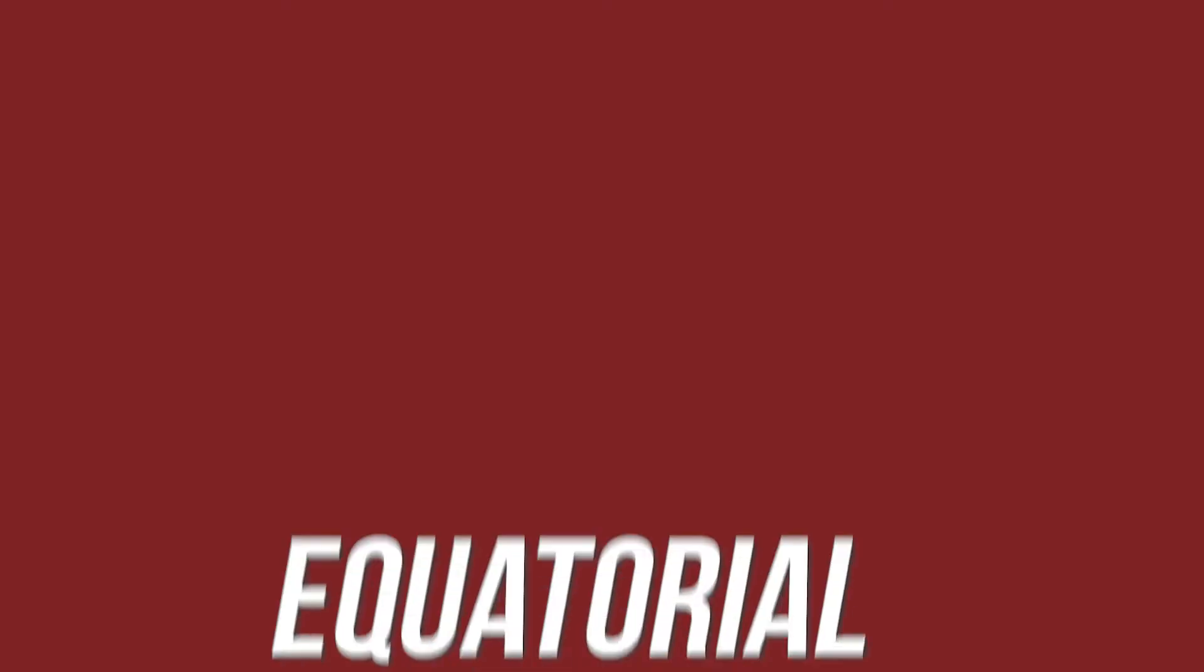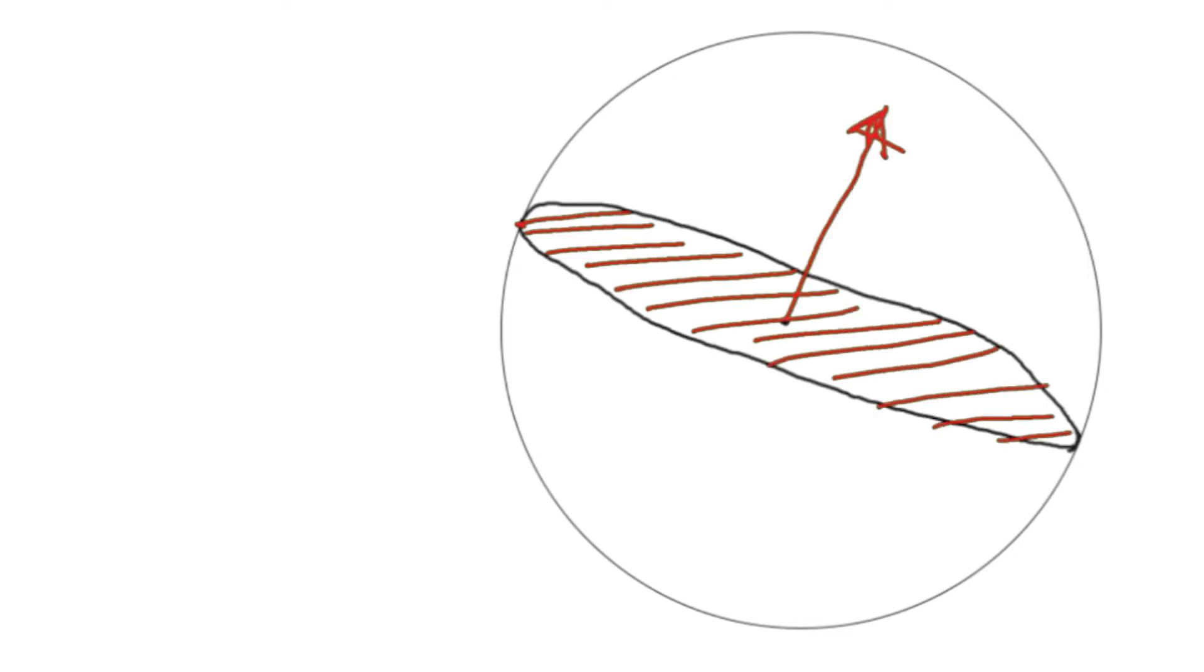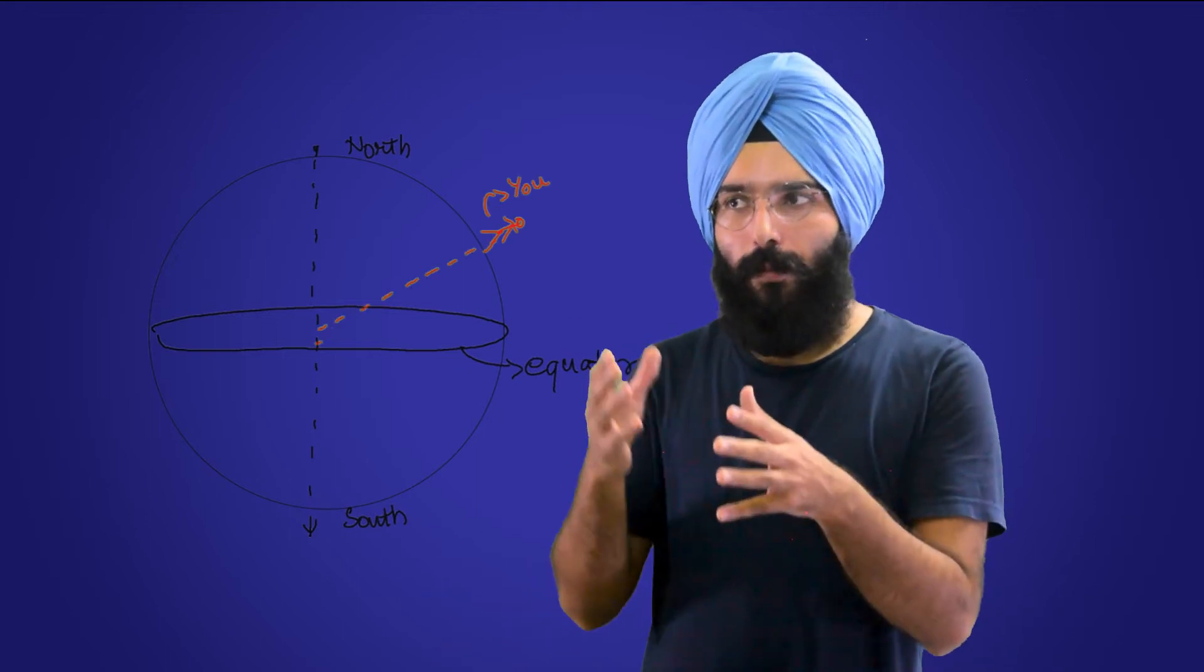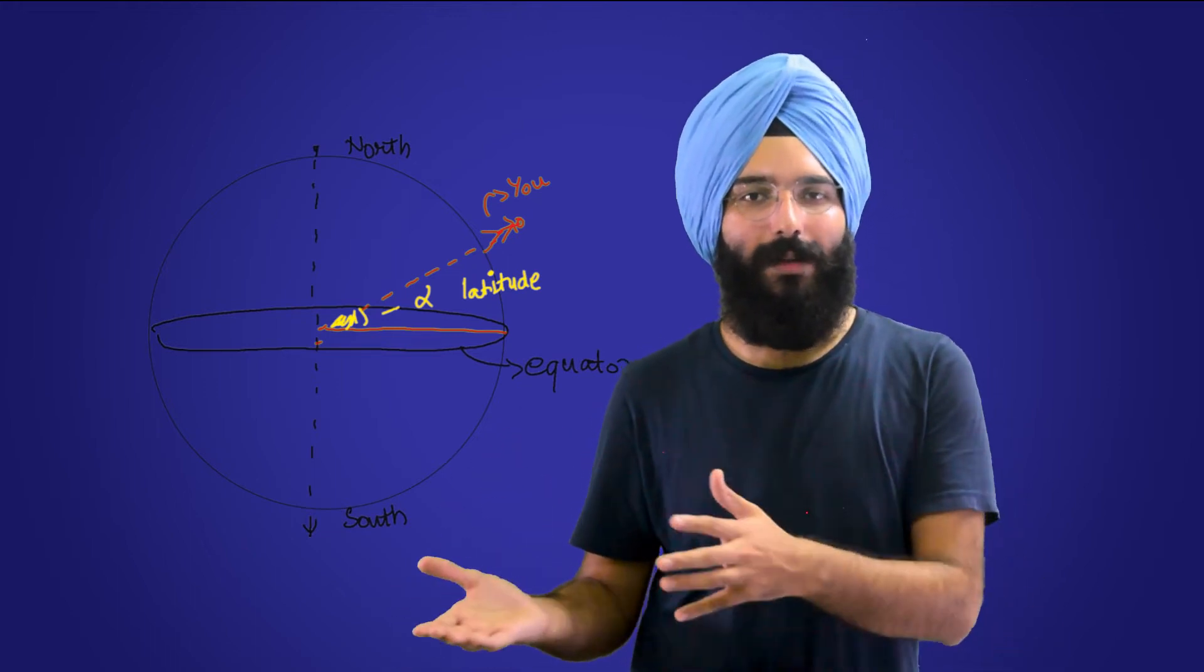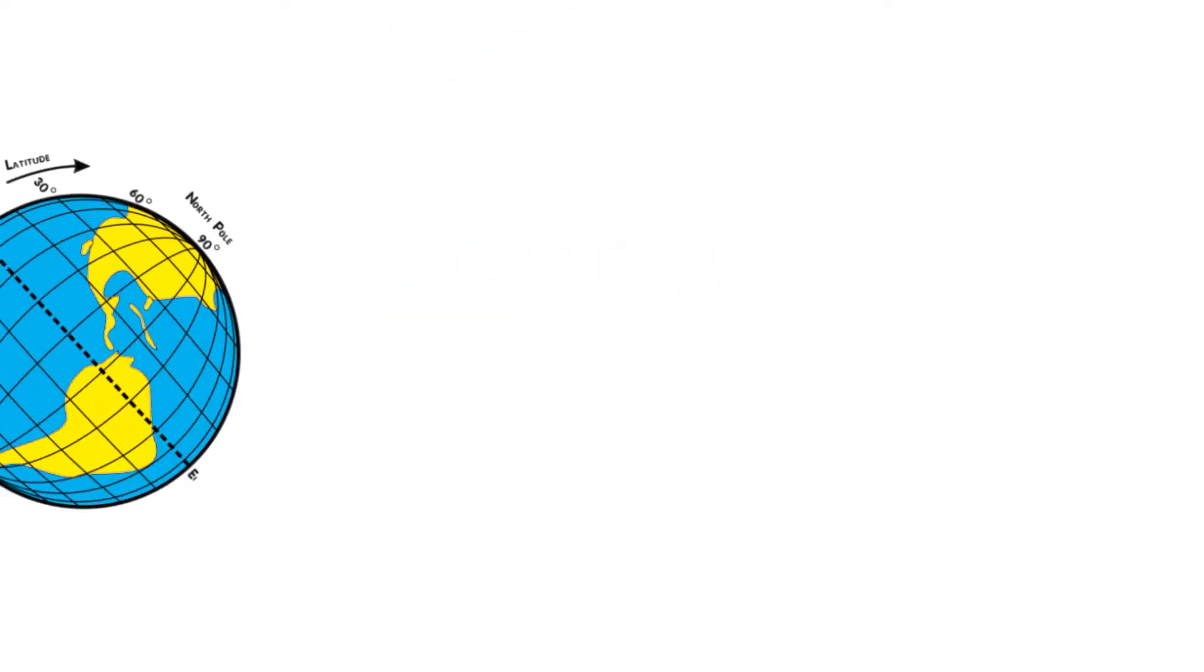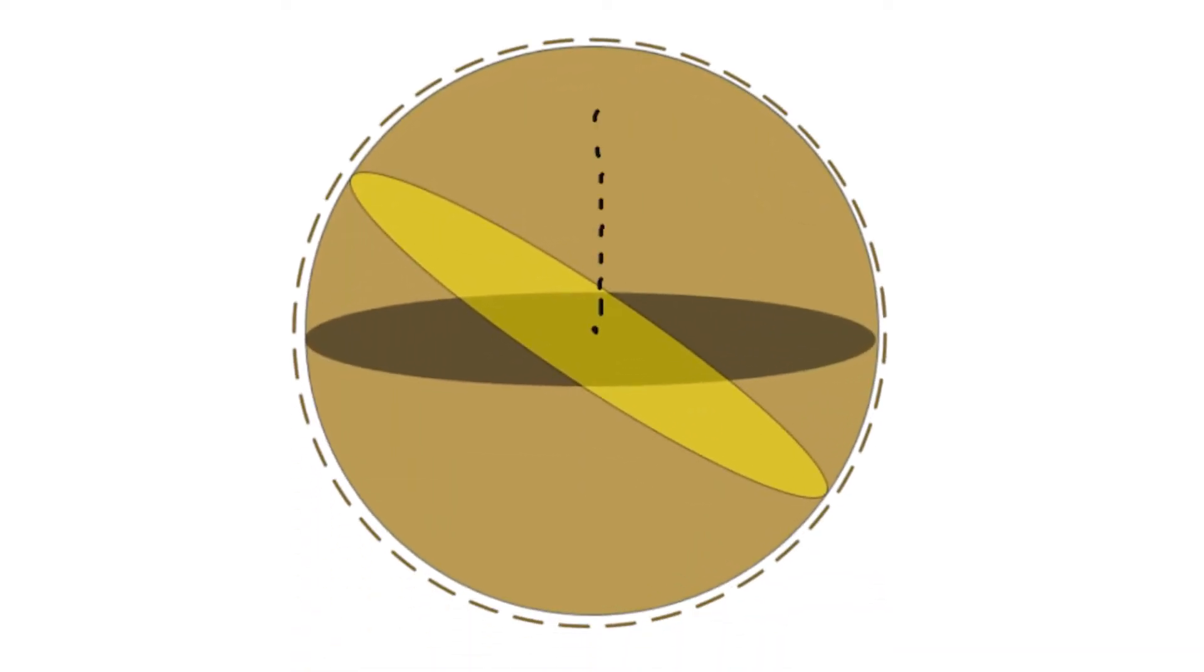Coming to our second coordinate system, it is the equatorial coordinates. This coordinate system is actually a bit more intuitive, and it makes a lot more sense. But beware, things are going to get a little complex here because we are introducing another great circle, which is the celestial equator. This great circle is actually the circle parallel to the inclination of the Earth's equator. Wait, how do I know the inclination of the equator on this sphere? Well, it is actually your latitude. The place you live in, the latitude is basically the angle which your place makes at the center of the Earth relative to the equator. So it's basically the same angle at which the equator is tilted relative to your place.